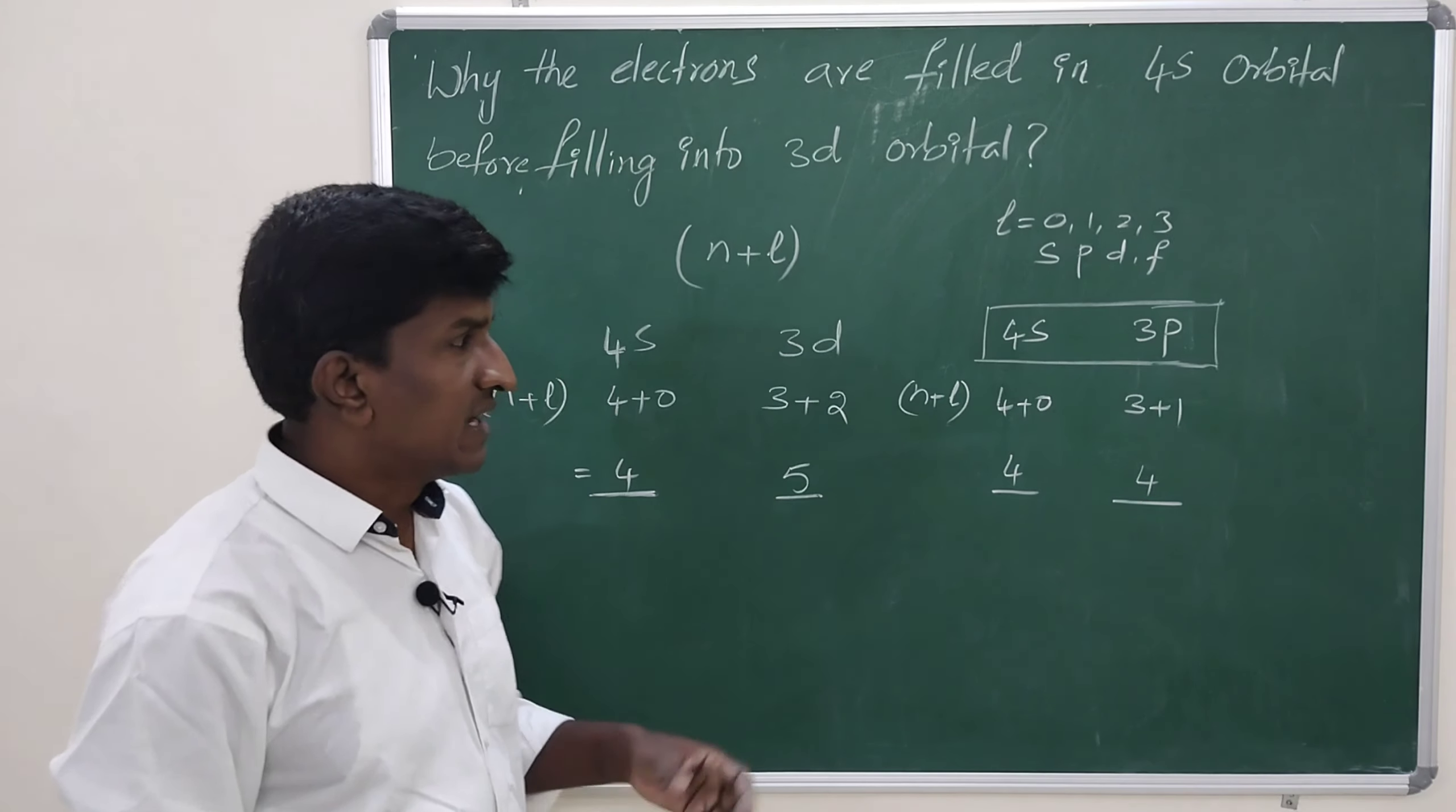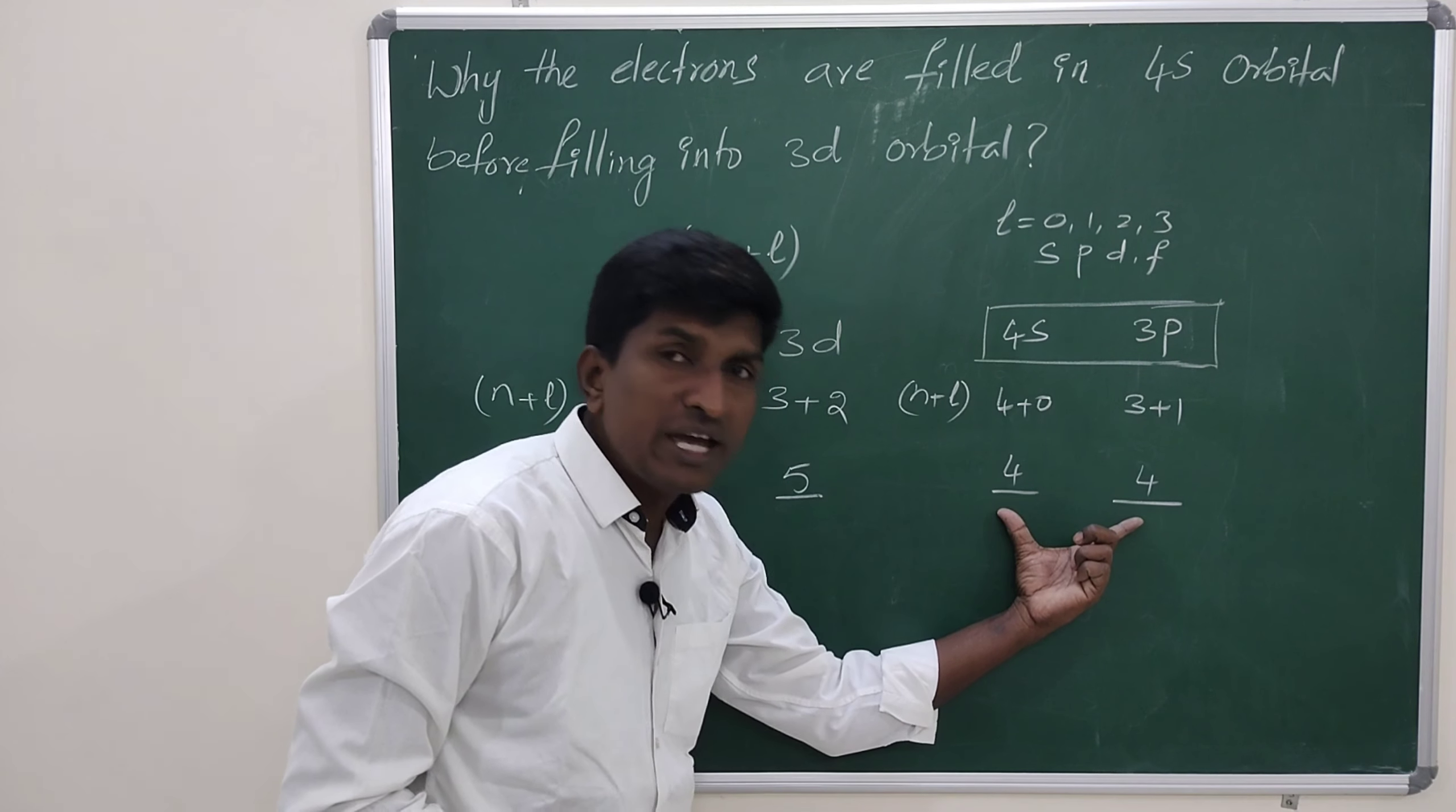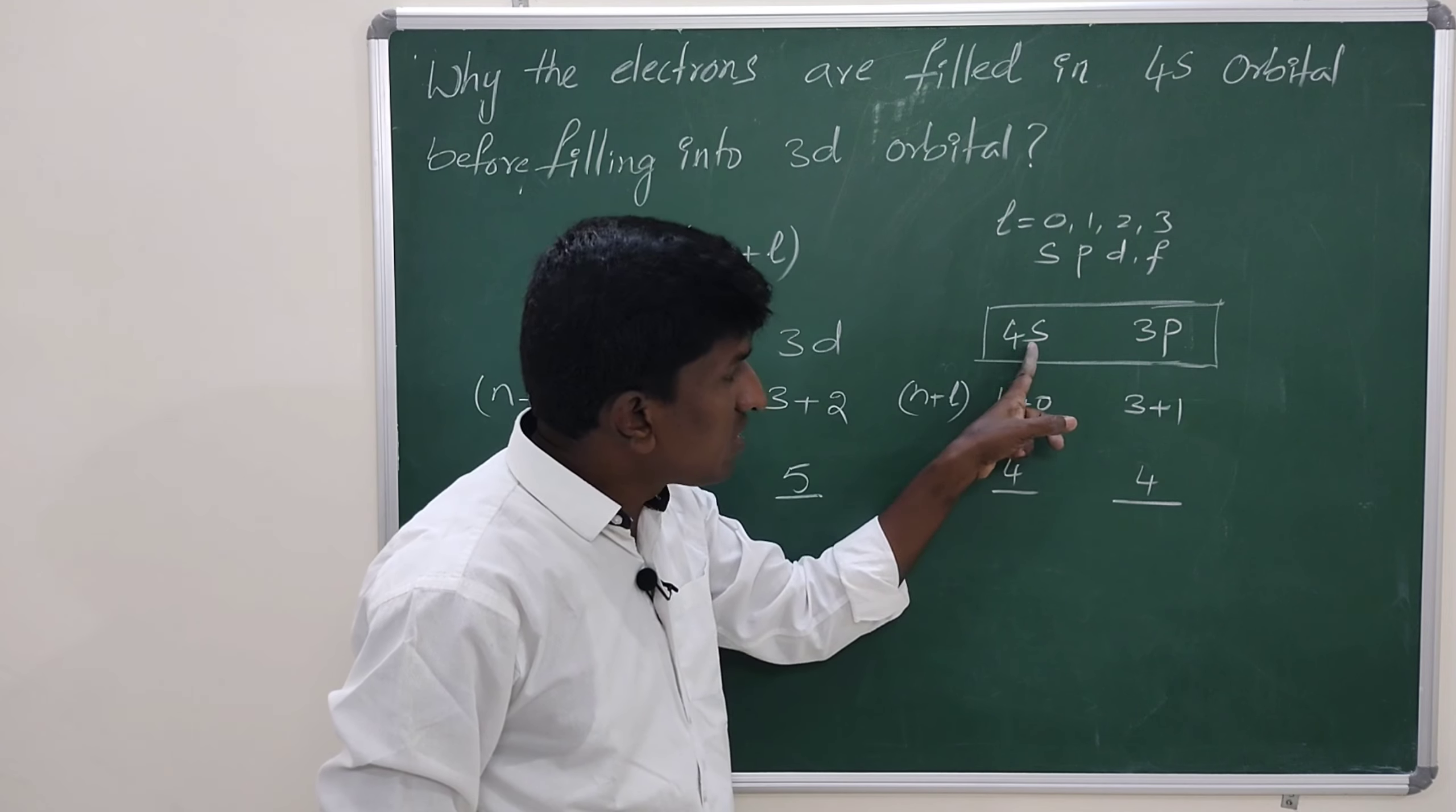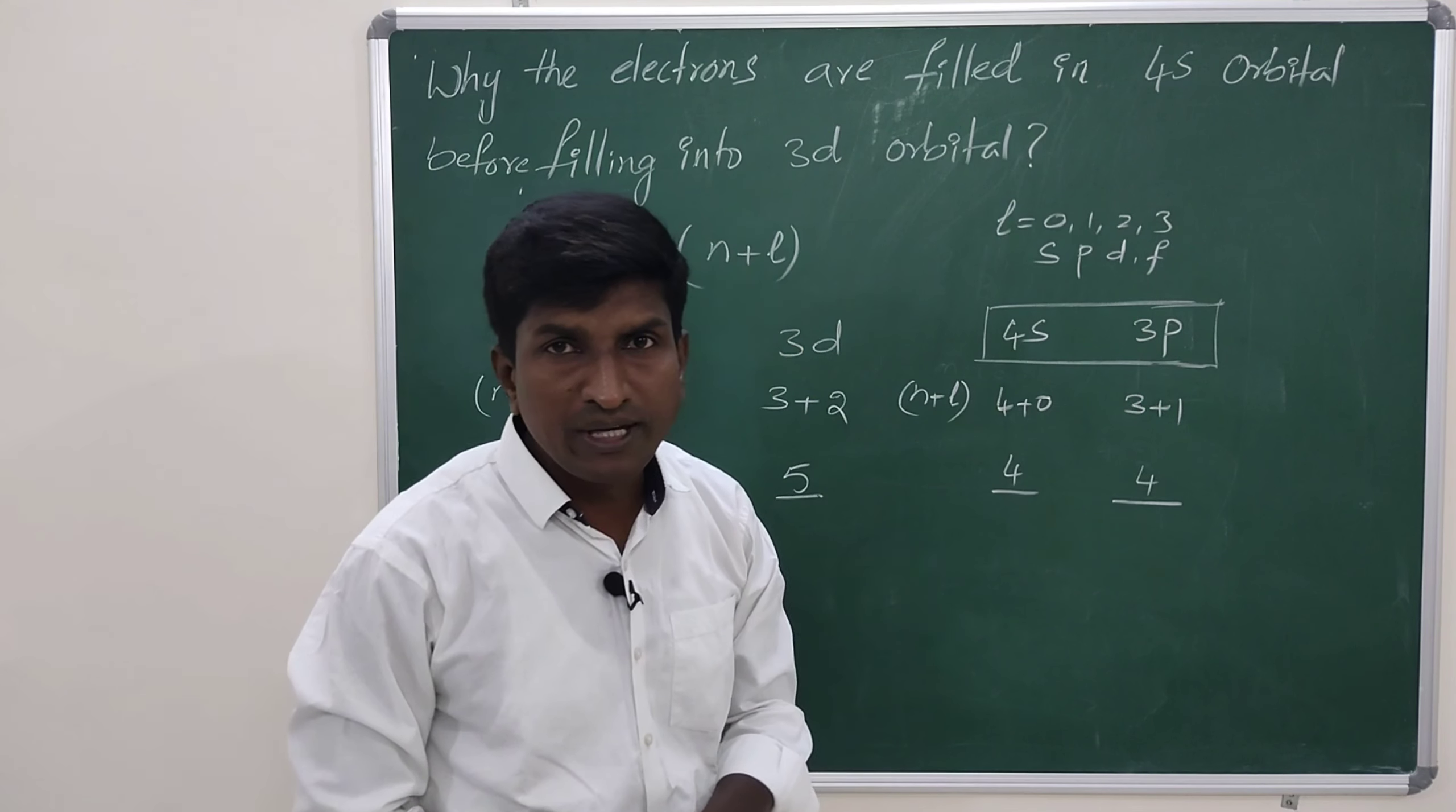Then, into which orbital are the electrons first filled? Here the electrons are first filled into 3p. Why? Because even though both having same energy, 3p orbital is in third shell and 4s orbital is in fourth shell. Due to having the 3p orbital in inner shell, even though they having the same energy, the electrons are first filled into 3p.